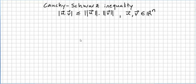This video is still on the chapter of vectors in vector spaces. We have been introducing concepts from the chapter of norm or length, and in the previous videos we introduced the concept of dot product. Now it is time to introduce a very important concept: the Cauchy-Schwarz inequality.